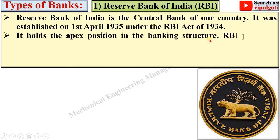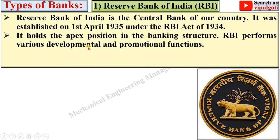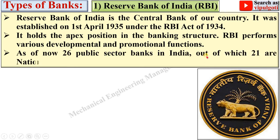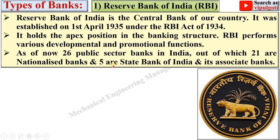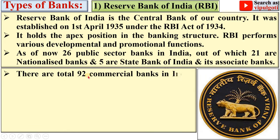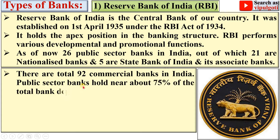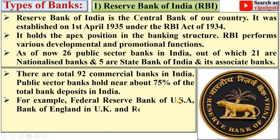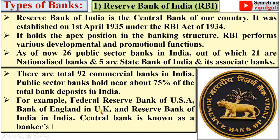RBI holds the apex position in the banking structure and performs various developmental and promotional functions. As of now, there are 26 Public Sector Banks in India, out of which 21 are Nationalized Banks and 5 are State Bank of India and its associate banks. There are a total of 92 commercial banks in India. Public Sector Banks hold nearly 75% of the total bank deposits in India. For example, the Federal Reserve Bank is the central bank of USA, Bank of England is the central bank of UK, and Reserve Bank of India is the central bank of India.